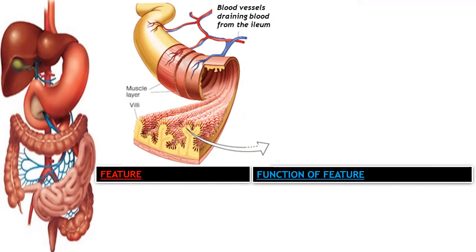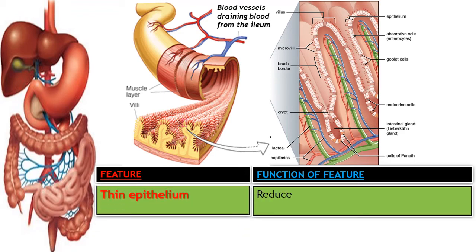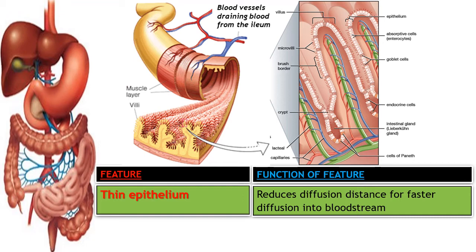The ileum also has a thin epithelium. The thin epithelium is important because it reduces the diffusion distance, resulting in faster diffusion of the end products of digestion — glucose, fructose, and amino acids — into the bloodstream. This maintains a steep diffusion gradient, giving a faster rate of diffusion. The epithelium is just one layer thick, which is very necessary.